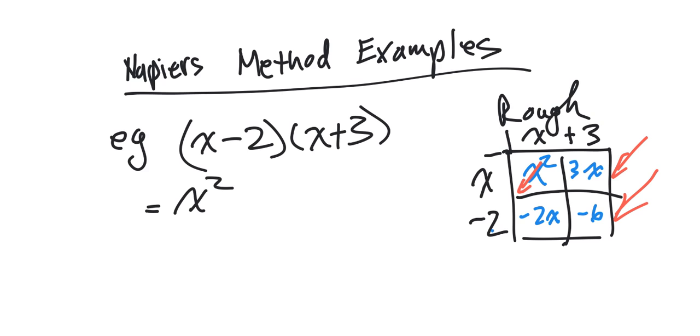Then I have to add up all the things down the diagonal. In this diagonal, I have 3 and minus 2, so 3 and minus 2 is positive 1x. And then for the last diagonal, minus 6, I just put it at the end. That's it.